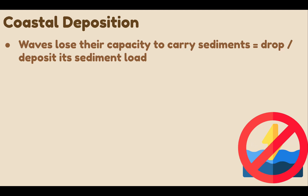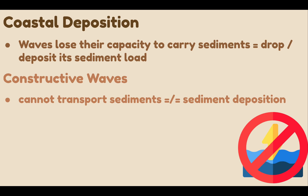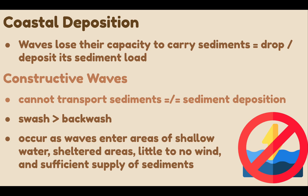Last, we have coastal deposition. When waves lose their capacity to carry or transport sediments because of reduction in energy, they will drop or deposit their sediment load. Waves that do not have the capacity to transport sediments, resulting in sediment deposition and accumulation, are called constructive waves. Deposition happens when the swash — the wave that rushes inland — is stronger than the backwash, or the waves rushing back to the sea. Deposition can occur as waves enter areas of shallow water, sheltered areas like coves and bays, little or no wind, and there is a sufficient supply of sediments. The waves must lose kinetic energy for coastal deposition to happen.